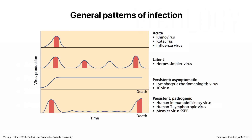They begin as an acute infection that simply never gets cleared. Here are patterns again from last time. On the top is our acute infection where we have a limited time period where a virus is produced. The blue curve is virus, time is on the bottom, virus production on the Y-axis. The red is disease — acute infections can be associated with disease, but a good fraction may be asymptomatic. On the bottom are three different kinds of persistent infections.